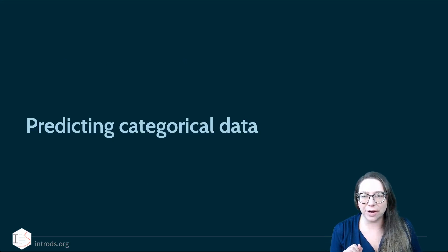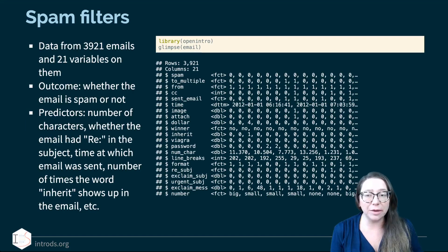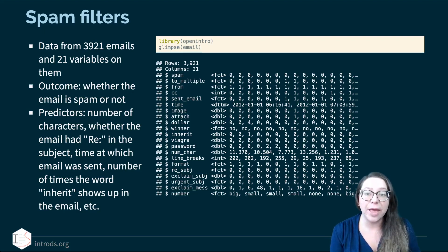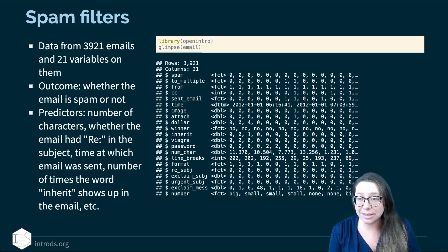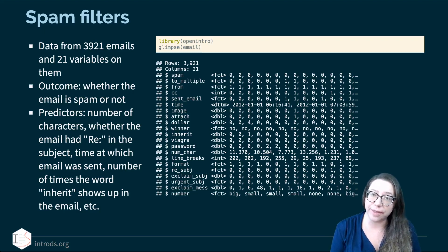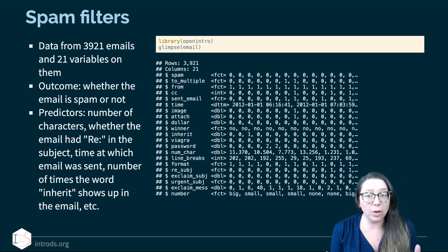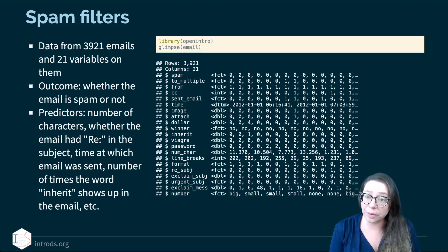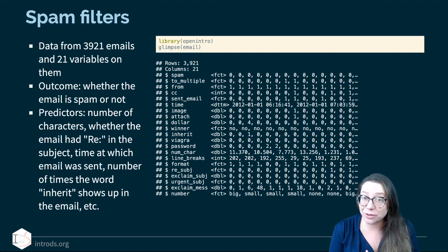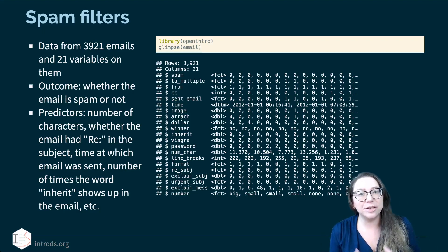So how do we predict categorical data? The data we're going to be using comes from the OpenIntro package — it's the data frame called 'email'. It contains data from almost 4,000 emails and 21 variables. Our goal is to model or predict whether the email is spam or not, so we're going to use these data to build or start building a spam filter.